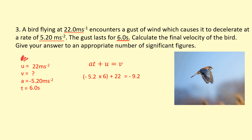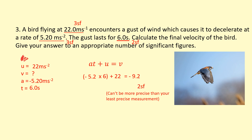The question asks for the answer to an appropriate number of significant figures. The given data: 22.0 has 3 significant figures, 5.20 has 3 significant figures, and 6.0 has 2 significant figures. We can't be more precise than our least precise measurement, so we round to 2 significant figures. The answer −9.2 m/s is already 2 significant figures, so that's our final answer in meters per second.